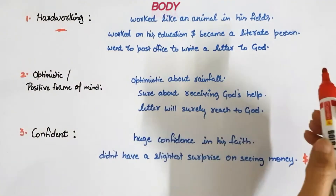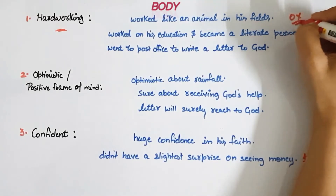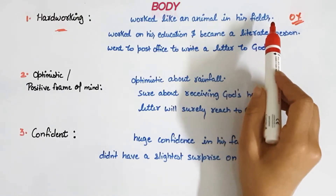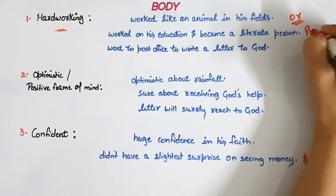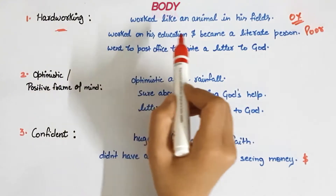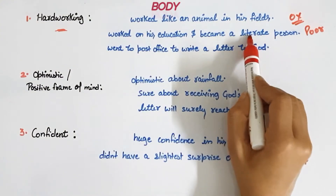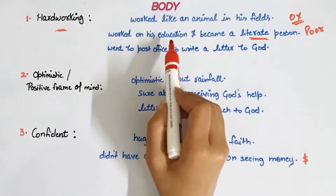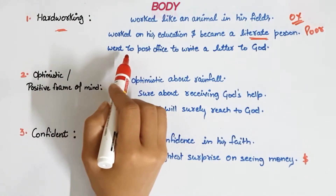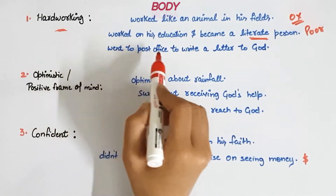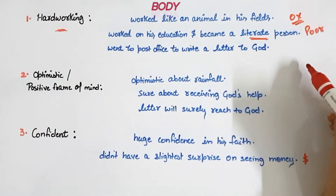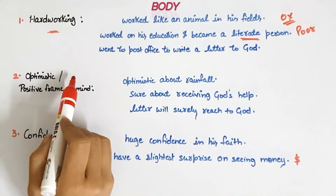In the body, explain each point. First, hard working: how do we know Lencho was hard working? He was an ox of a man who worked like an animal in his fields. He was a poor person who had to work on his field, but in spite of that he worked on his education and became a literate person. Also, when all his crops were destroyed by the hailstorm, he went to the post office to write a letter to God — all these things show how hard working he was.